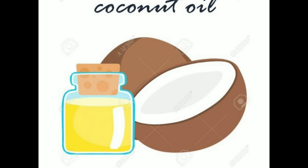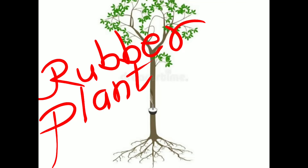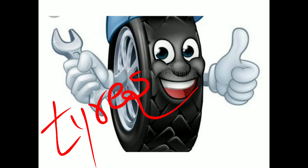Next is coconut oil. Coconut oil is made from the fruit that comes from the coconut tree. The coconut oil we use at home comes from the coconut tree. Next is the rubber plant. We get gum from the rubber plant. This gum is used to make rubber — the tires of our cycle and school bus are made from rubber, which comes from the rubber plant.